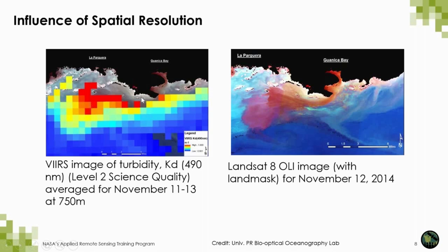Comparing these two images also shows the limitations of coarse pixel images such as VIIRS, which is not able to show fine-grained details happening close to the coastal zone or in between reefs on this platform. Therefore, there is a trade-off between temporal and spatial resolutions between both sensors.